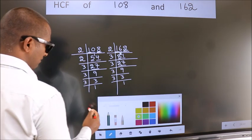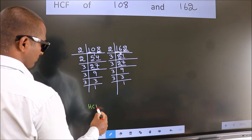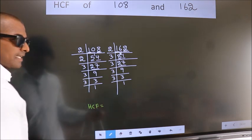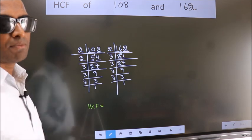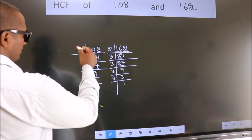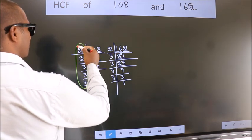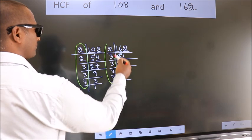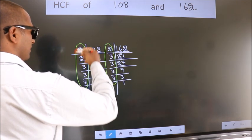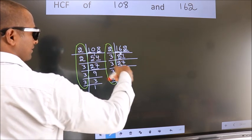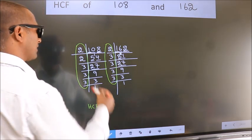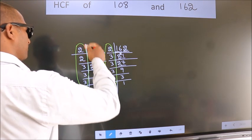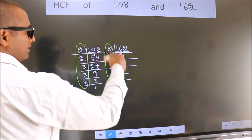Therefore, our HCF is, HCF is the product of the numbers which should be present over here and also here, here and here. So now let us find the numbers which should be present over here and over here and also here.